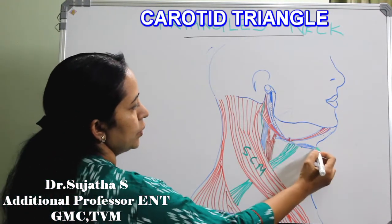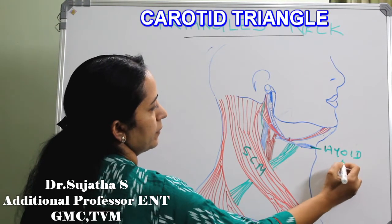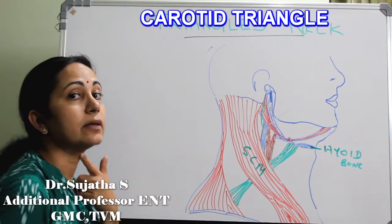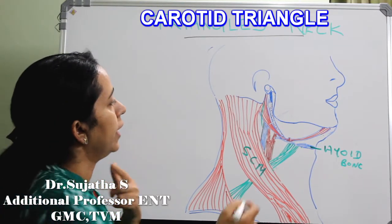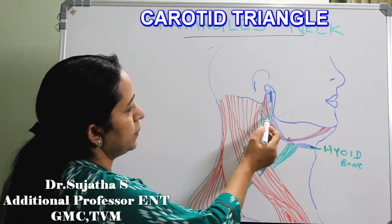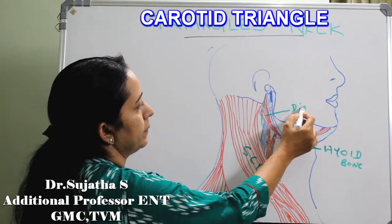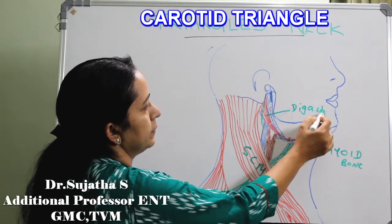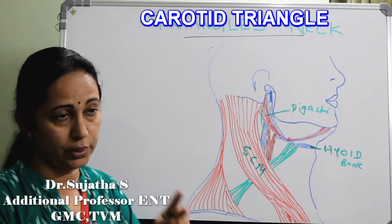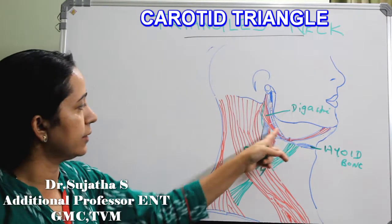This bone is the hyoid bone, an important bone. To the hyoid bone attach the posterior belly and the anterior belly of the digastric. In between the anterior and posterior belly is the submandibular or digastric triangle.